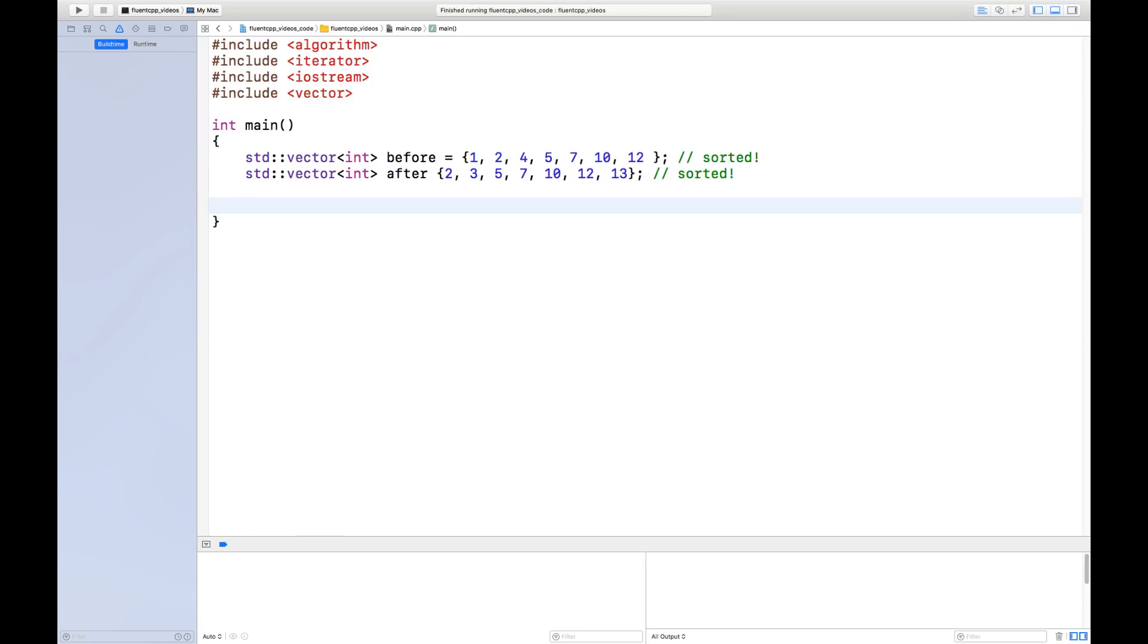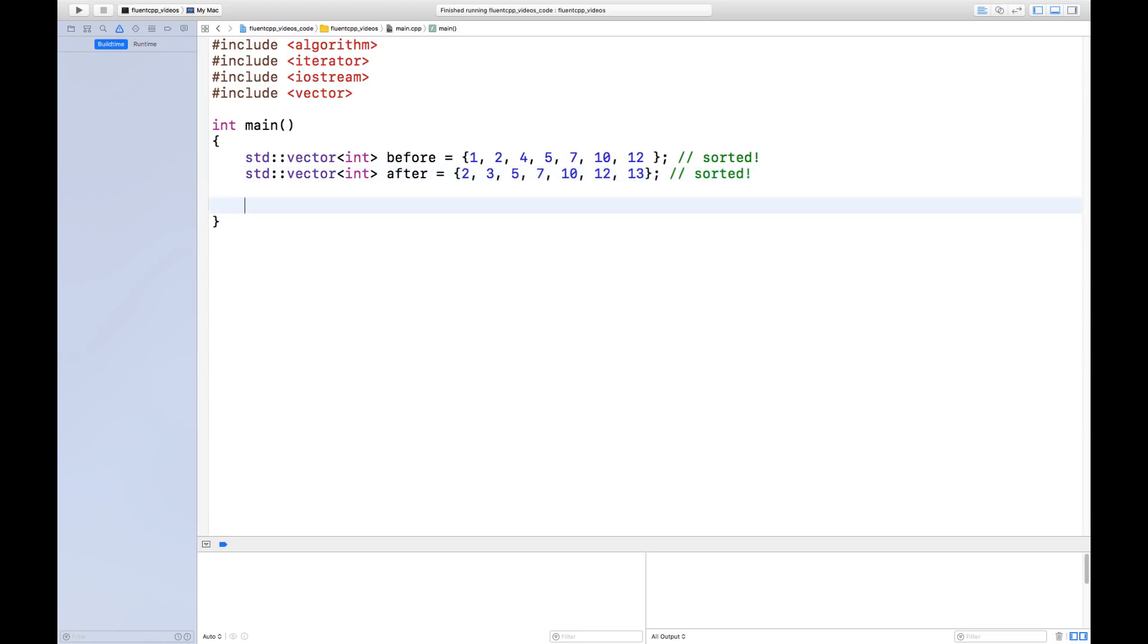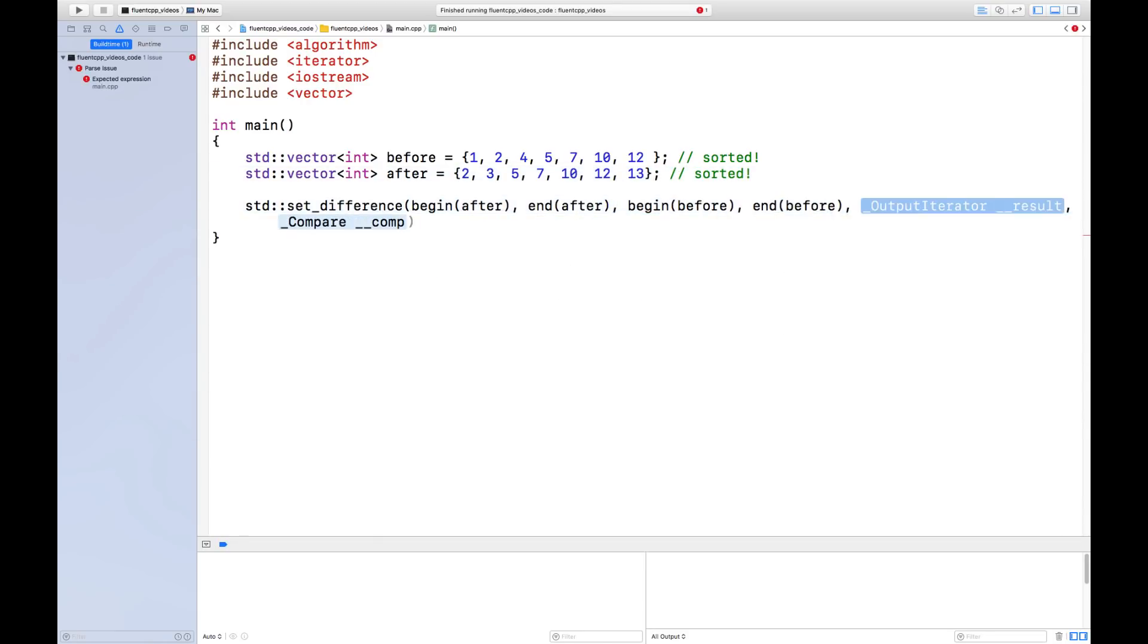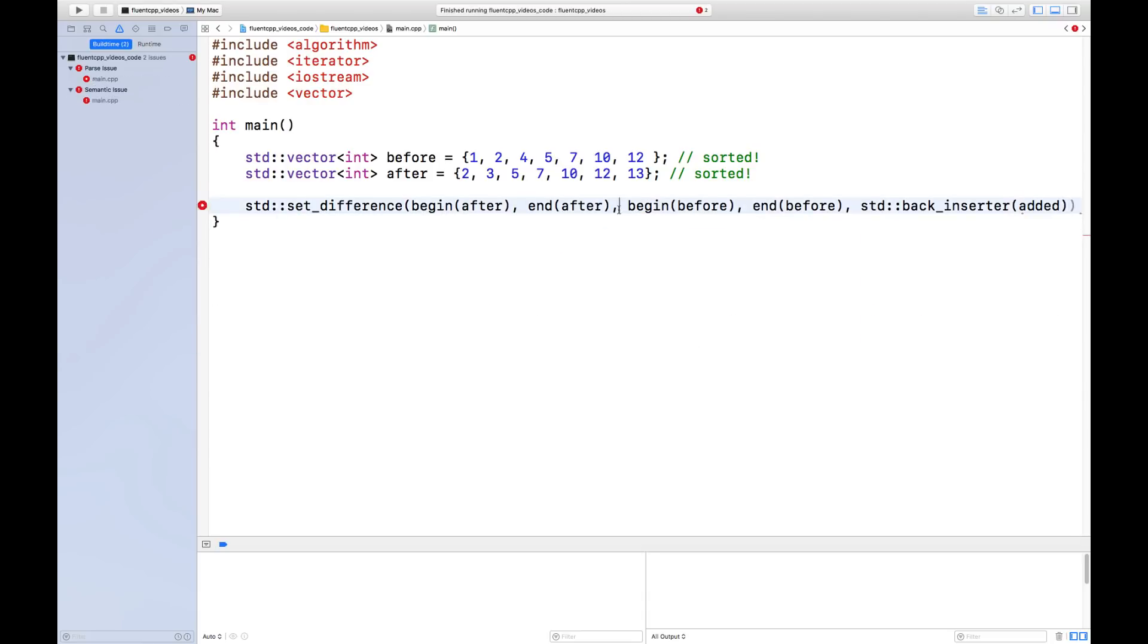So what values have been added is essentially the values that are after but that are not before. So it sounds like a job for set_difference. This line of code takes the values that are after and not before and outputs them in a collection that's called added, which I need to create beforehand.